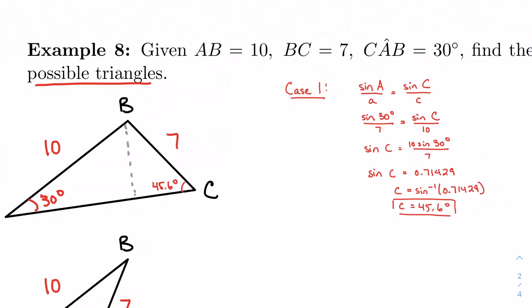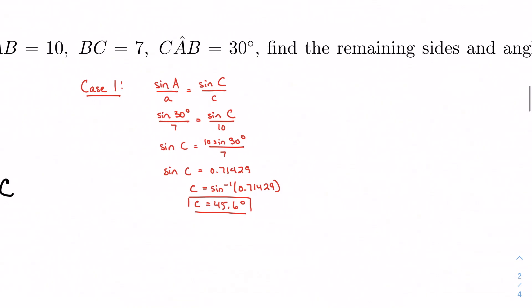I can find my missing angle, right? Because the sum of all three angles has to add up to 180 degrees. So I'm going to have 75.6 plus B equals 180. So I'm going to get B equal to 104.4 degrees.